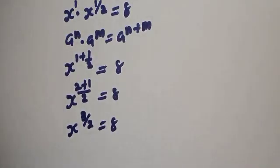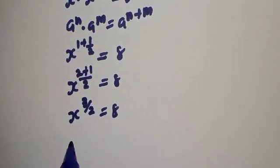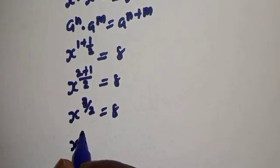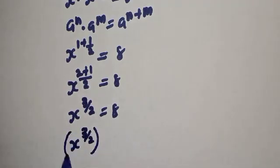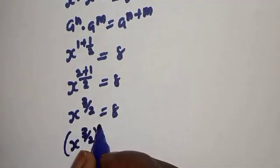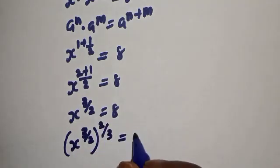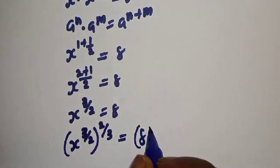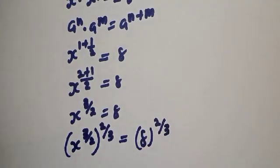Let's take the power of both sides by 2 over 3. That is, s raised to the power of 3 over 2, then raised to the power of 2 over 3, is equal to 8 to the power of 2 over 3.